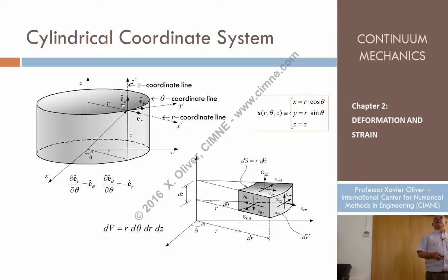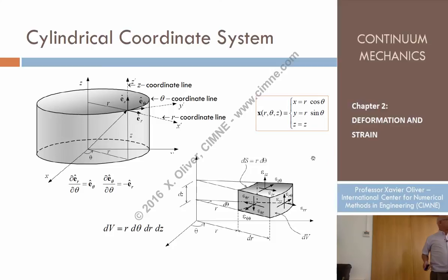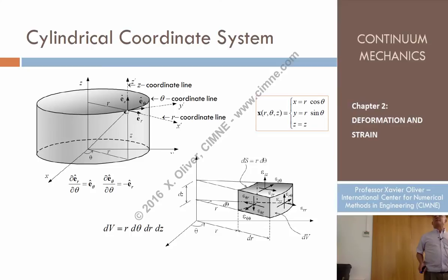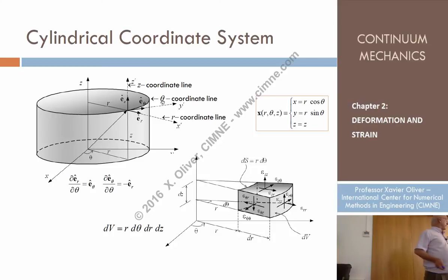What is the r coordinate line? If I am at that point and keep the other two coordinates, theta and z, fixed, I obtain a straight line — this is called the r coordinate line. Now, keeping r and z fixed and varying theta, I obtain a circle. This is called the theta coordinate line.